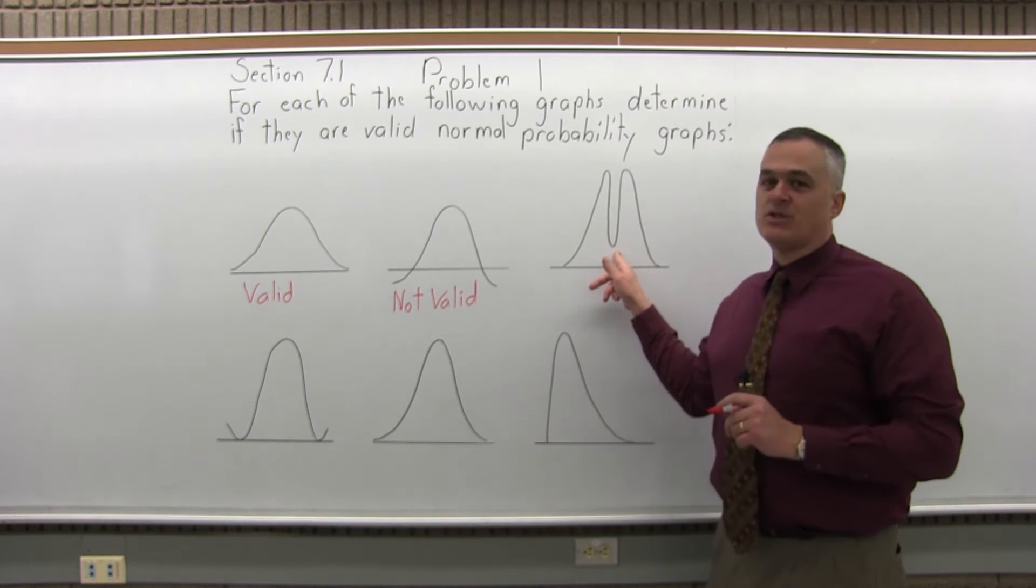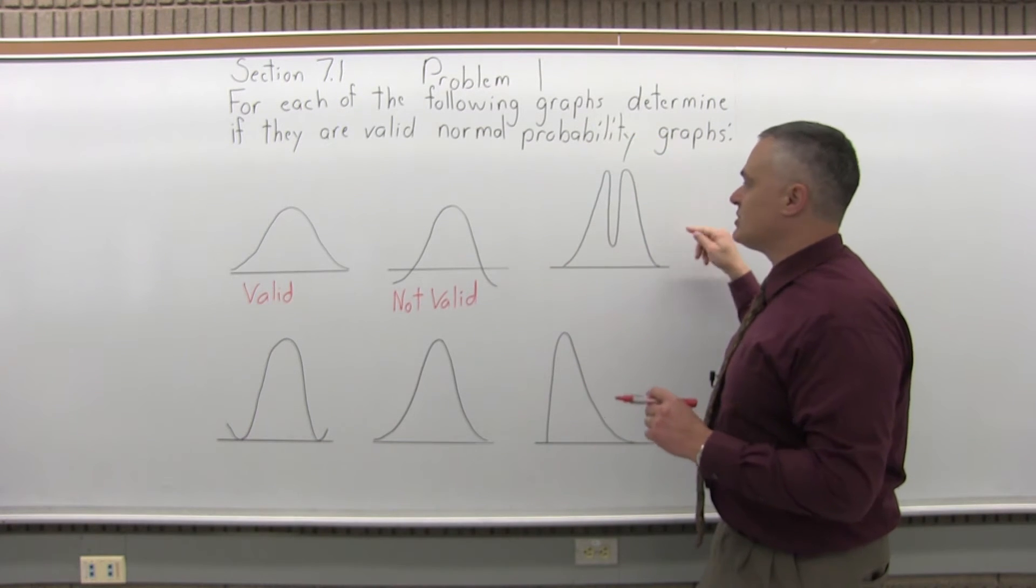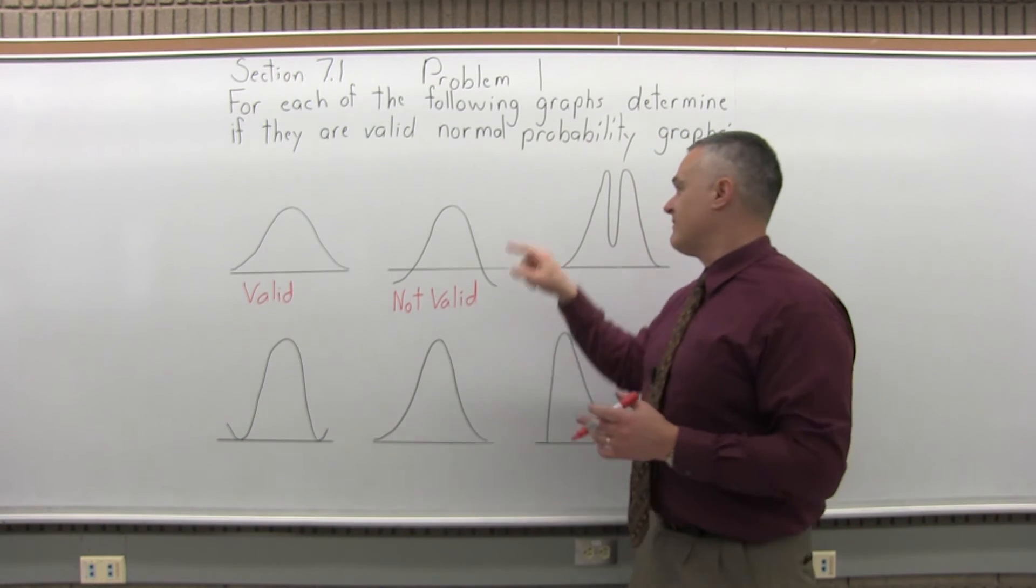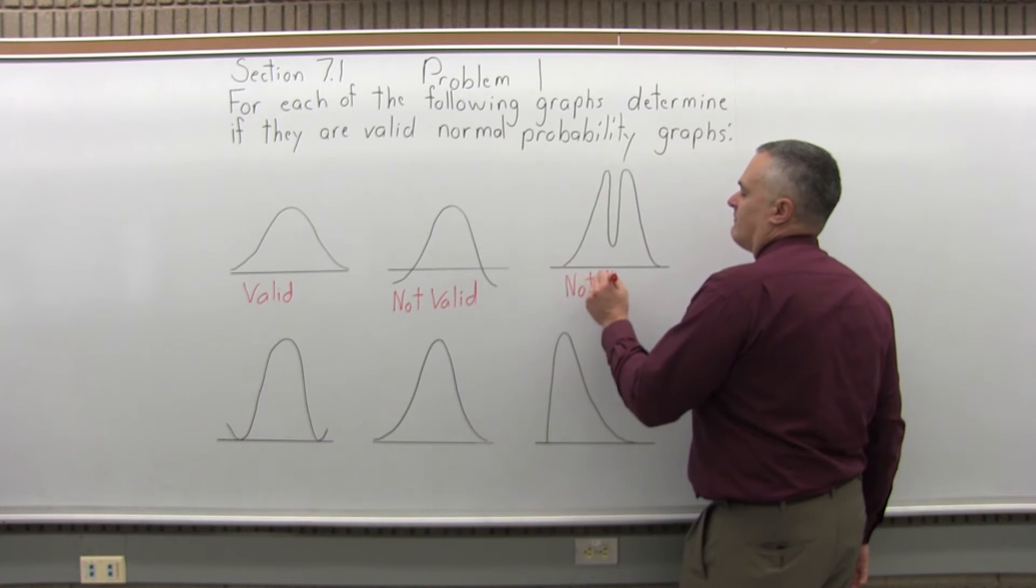This one just has the wrong shape. It is symmetric, but it doesn't have the bell shape that a normal graph is supposed to have. This big dip in the middle is the deal breaker, so not valid.